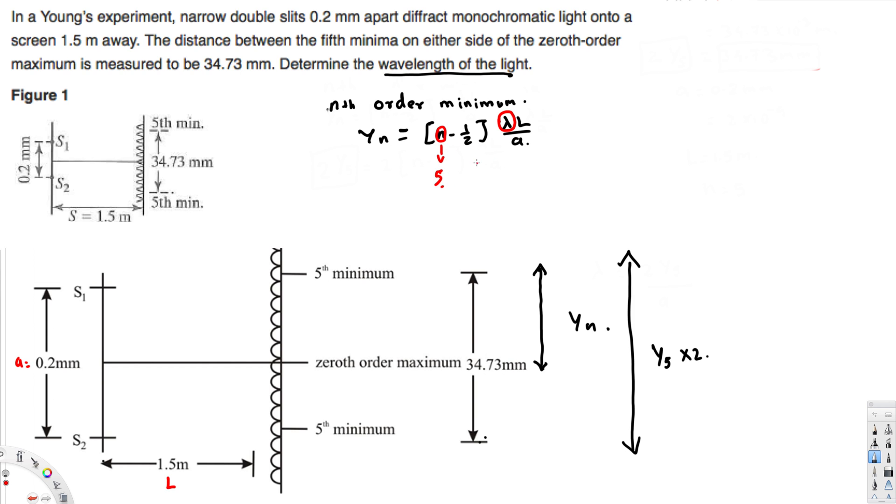So we have everything, right? So we can find lambda. Let's go ahead and recreate the equation in terms of this y5. So we can say 2 times y5 is equal to 2 times (n minus 1/2) lambda L over a.